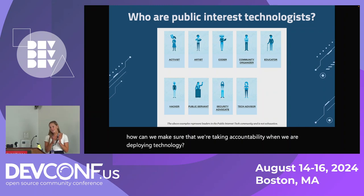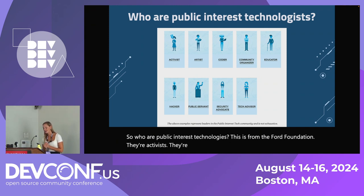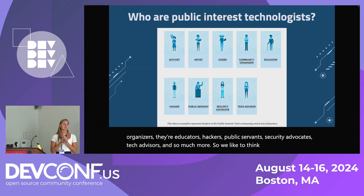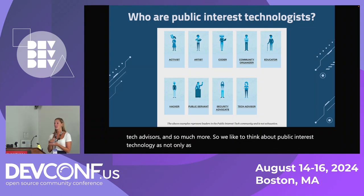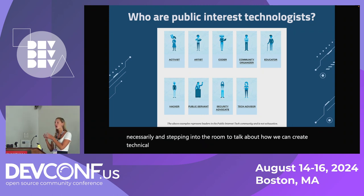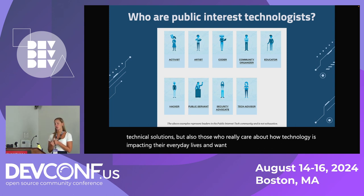So who are Public Interest Technologists? This is from the Ford Foundation. They're activists, artists, coders, community organizers, educators, hackers, public servants, security advocates, tech advisors, and so much more. We think about Public Interest Technologists not only as people with a technical background coming in to talk about technical solutions, but also those who care about how technology is impacting their everyday lives and want to leverage it for the better. Public Interest Technologists span a wider range of identities professionally, across sectors.